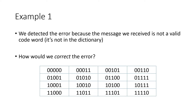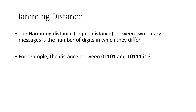But how can we correct that error? How would we be able to tell what the original intended message was supposed to be? To do that, we're going to use a concept called Hamming distance. The Hamming distance between two binary messages is the number of digits in which they differ.